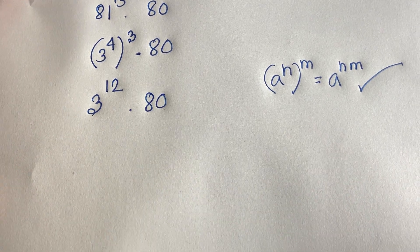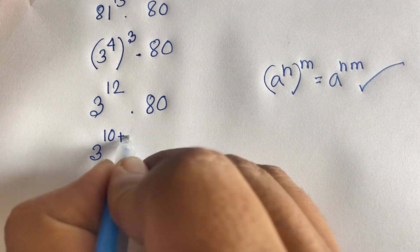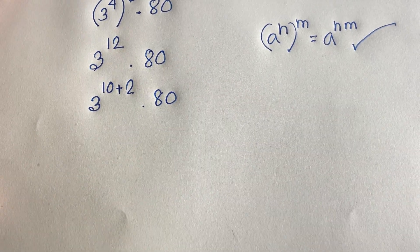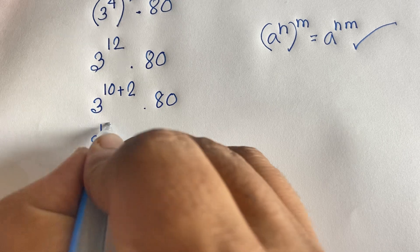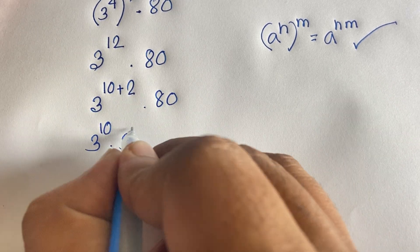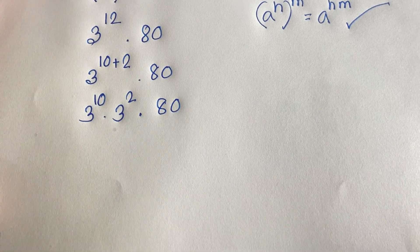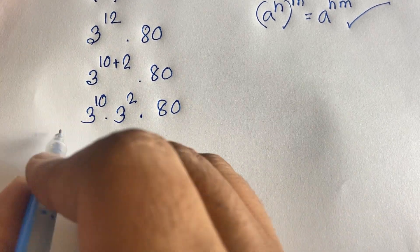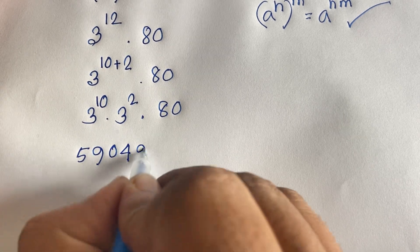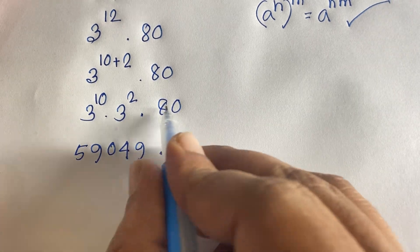I can rewrite 3 to the power 12 as 3 to the power 10 times 3 to the power 2, times 80. We know that 3 to the power 10 equals 59049, and 3 to the power 2 equals 9. So the expression becomes 59049 times 9 times 80.